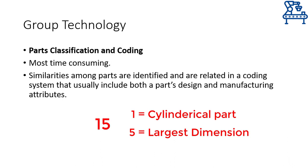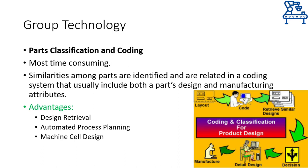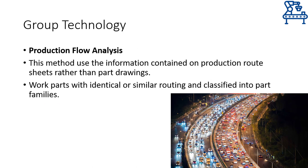Although this method is the most time-consuming and requires thoughtful planning, once it is done there are several advantages. For example, if a design engineer wants to design a new part with a certain code, he can easily search for a similar code in the database to know whether the plant is already producing a similar part — hence design retrieval becomes quite simple. Moreover, part codes can be used to automatically plan the processing steps required and hence the design of the machine cell as well.